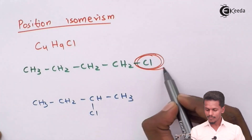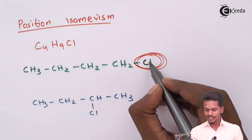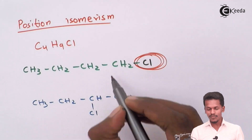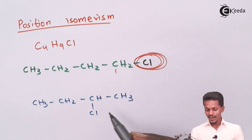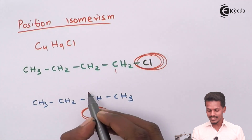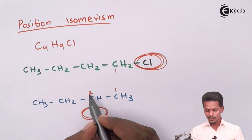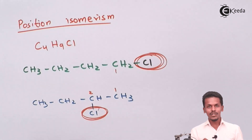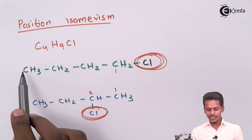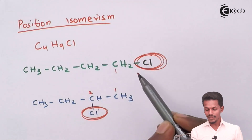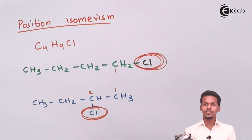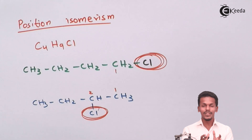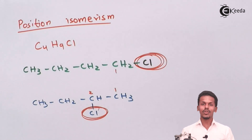The functional group here is the chlorine atom. In the first molecule, Cl is attached to the first carbon atom according to IUPAC naming. In the second molecule, Cl is attached to the second carbon atom. The chlorine atom's attachment to the carbon skeleton is different in each case — it differs in position. That is why they are called position isomers: they differ in the position of the functional group attached to the carbon skeleton.